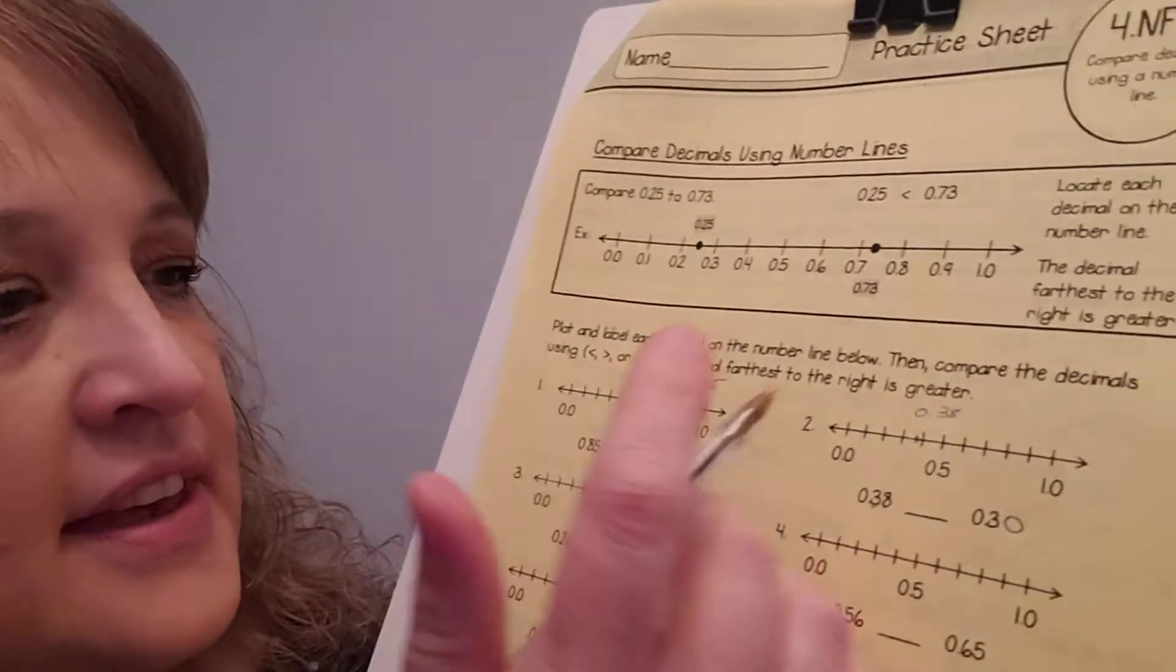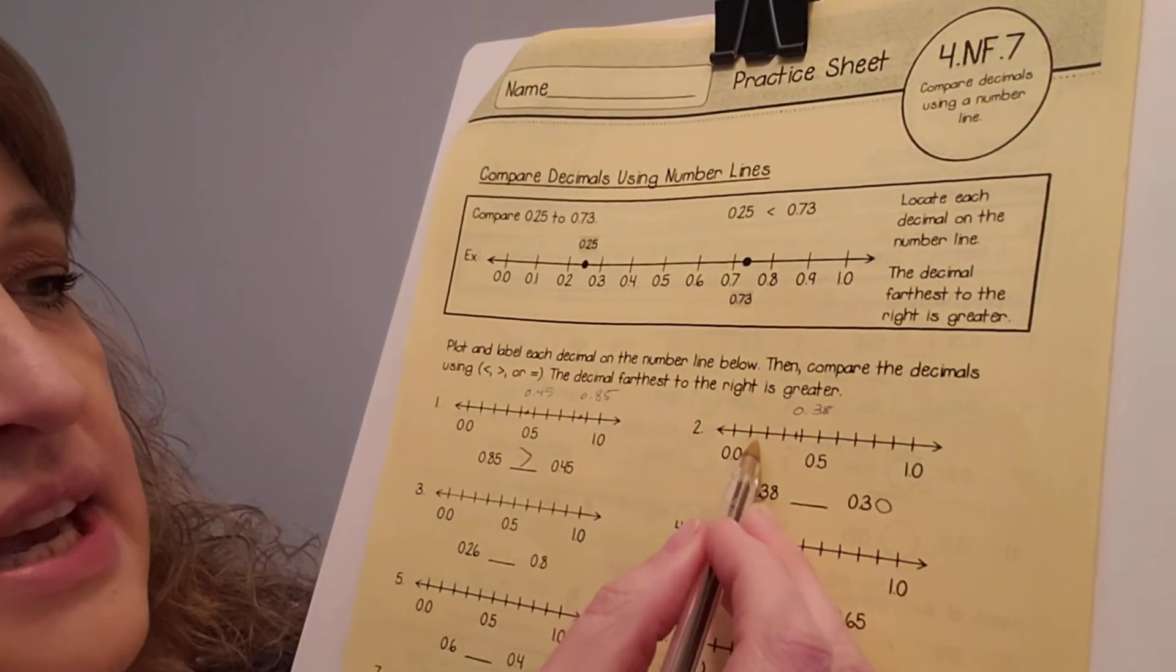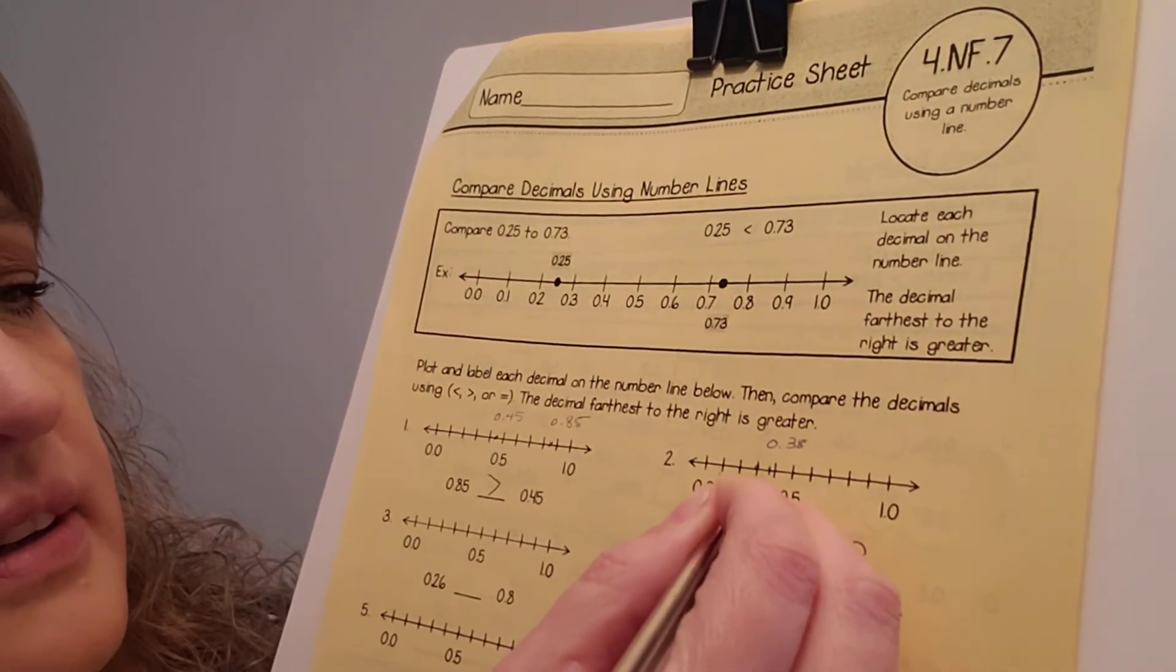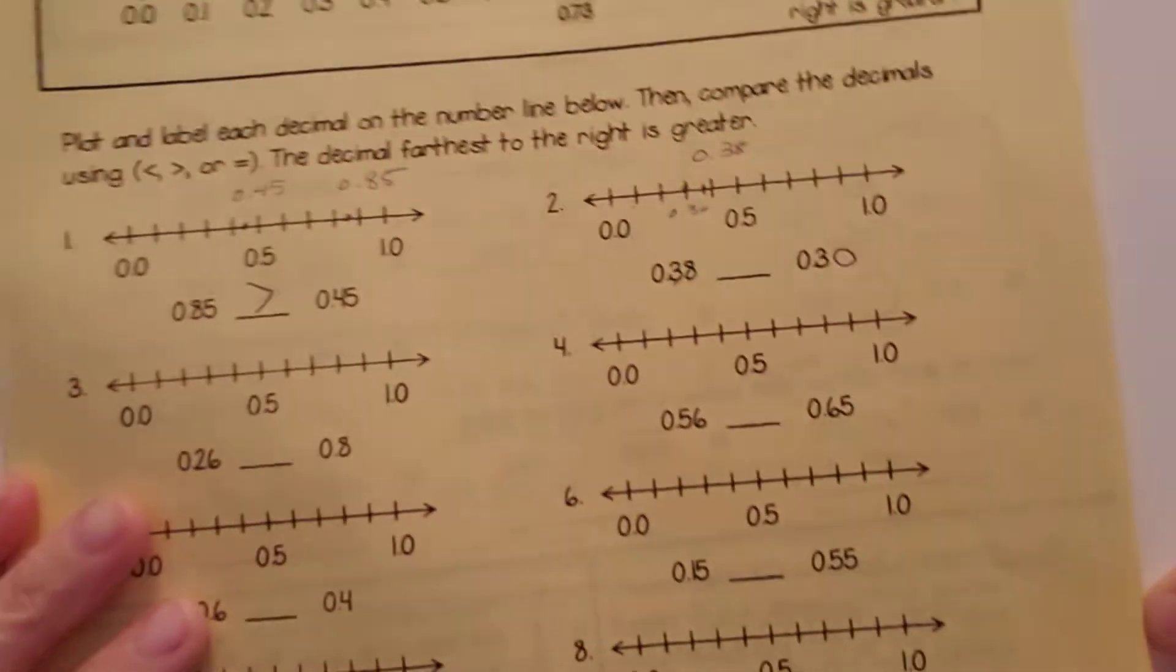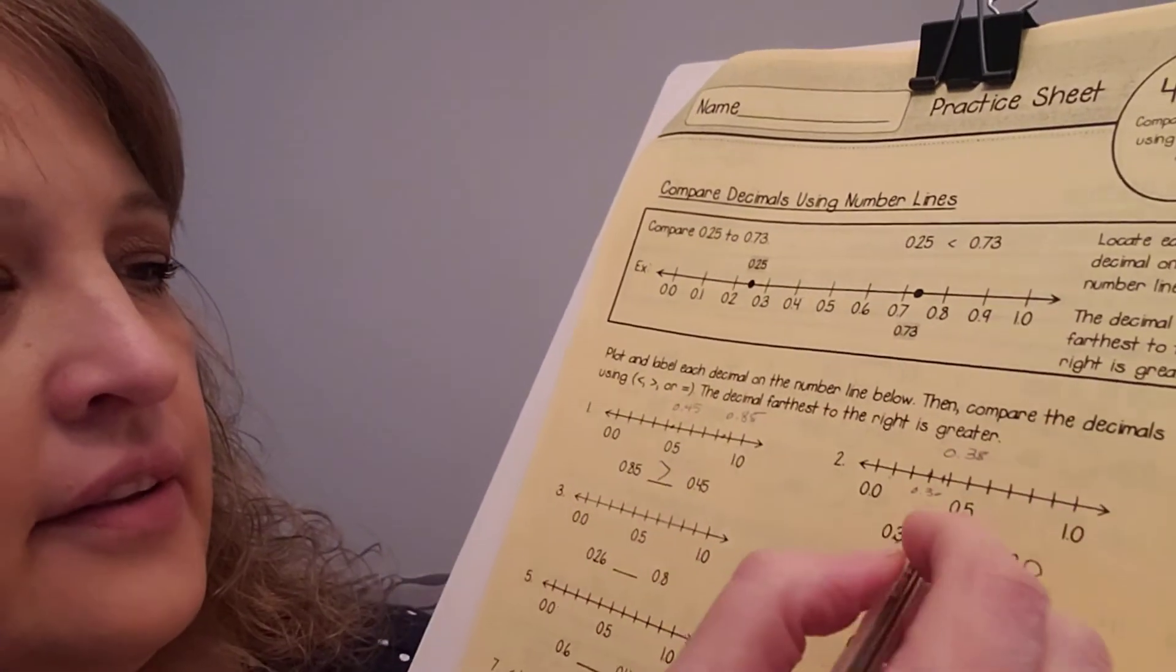And then, the next one, I have 30. 30 cents. So, 10, 20, 30 would be about right there. So, which one is larger? Well, 38.